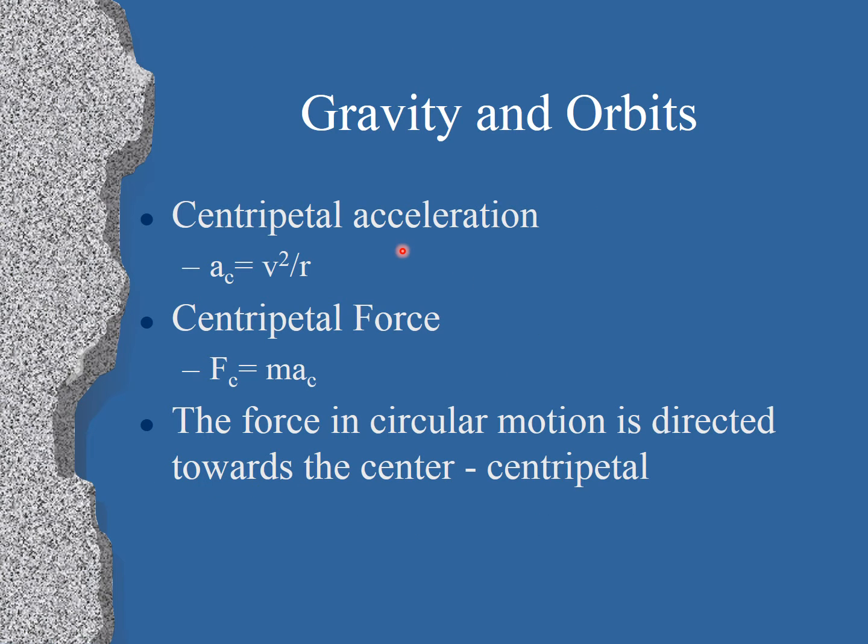Gravity and orbits are intimately related. We just learned about centripetal acceleration. We learned that the acceleration is equal to the velocity squared divided by the radius. We also learned that the centripetal force is equal to the mass times the acceleration. And lastly, we learned that the force in circular motion is directed towards the center, and that's called centripetal force. Well, guess what? The centripetal force in an orbit is gravity. When we spin the stopper around on a string, the centripetal force is caused by the string. The moon spinning around the Earth, the string is gravity. So the centripetal force and the gravitational force between the Earth and the moon are exactly the same thing.